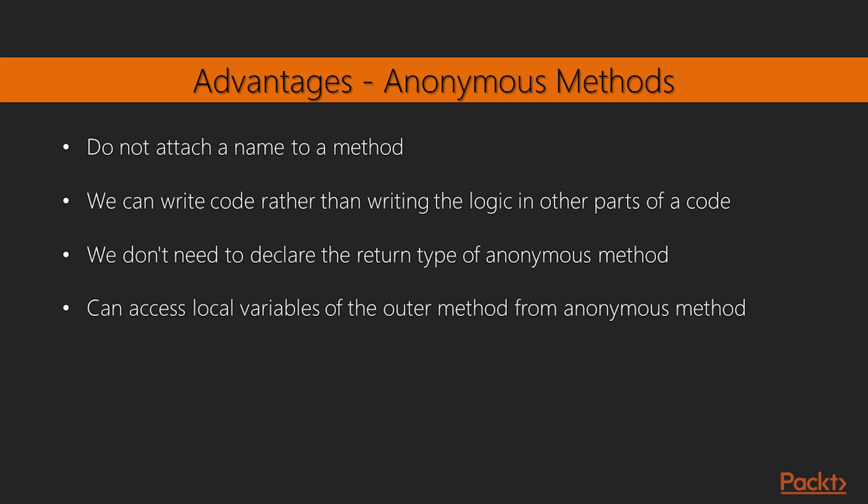Let's see some advantages of anonymous methods. Since we don't attach a name to a method, they are a good solution if we want to invoke the method only once — we can write the code in place rather than in other parts of the code. We don't need to declare the return type, since it is inferred from the delegate's signature. We can access local variables of the outer method from the anonymous method, as outer variables are captured inside it. We also don't need to create a named method for snippets of logic that are invoked only once.